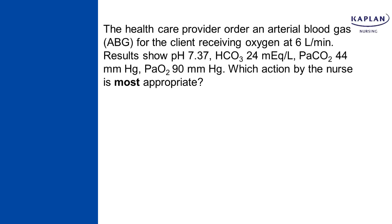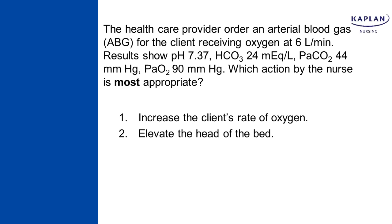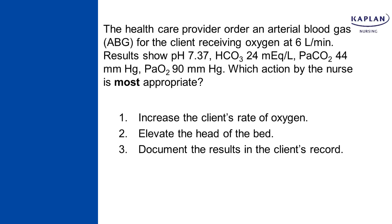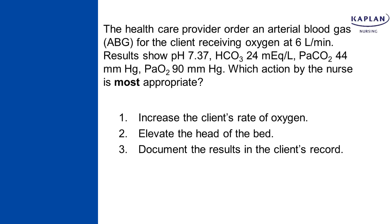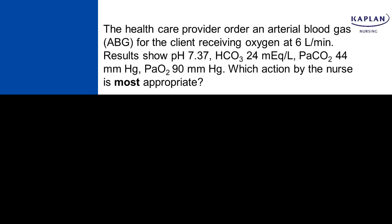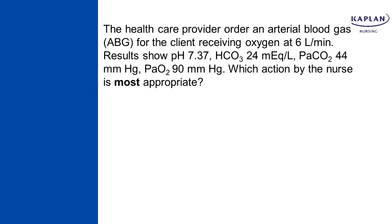I assume the question is about the ABGs since there's nothing else in the stem, but I always look at my answer choices to confirm I have the right question. Number one: increase the client's rate of oxygen — that's about ABGs. Number two: elevate the head of the bed — relates to respirations. Number three: document the results. Number four: instruct the client to cough and deep breathe. All responses are about the ABGs.